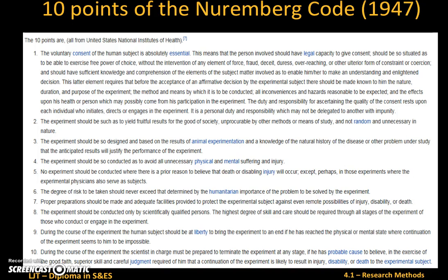Key elements of the Nuremberg Code include voluntary consent — somebody giving their consent to take part, as opposed to those poor prisoners who were given no choice at all. Go through and make notes on those 10 elements.